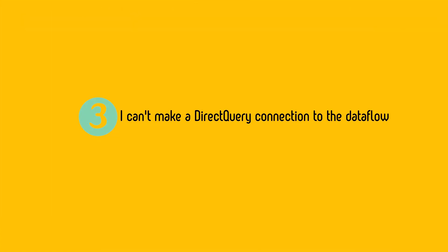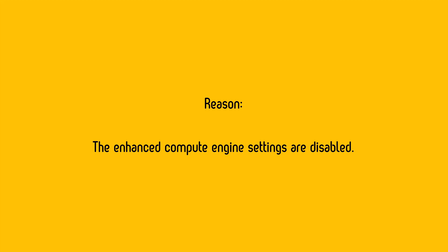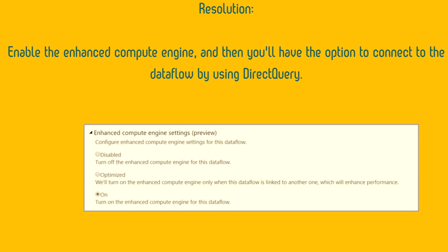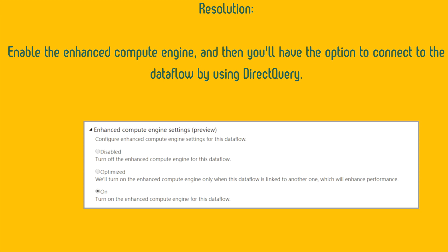Next: you can't make a direct query connection to the data flow. If you intend to use the data flow as a direct query source, you might need to enable it first — otherwise you cannot use it. The reason is the enhanced compute engine settings are disabled in your Power BI admin portal. To enable them, go to your Power BI portal, find the Enhanced Compute Engine Settings — which was in preview at the time of publishing — and turn them on.